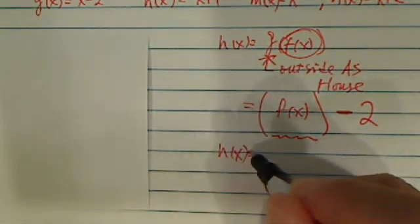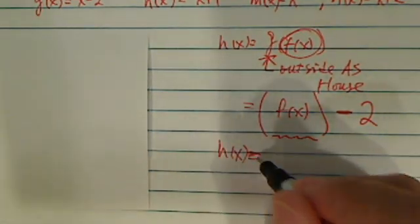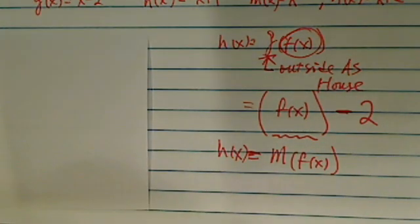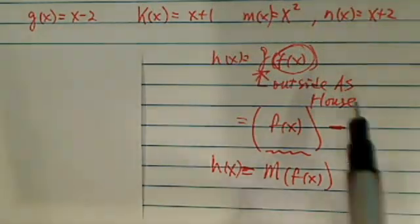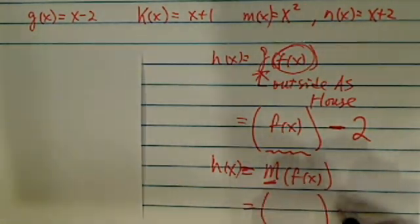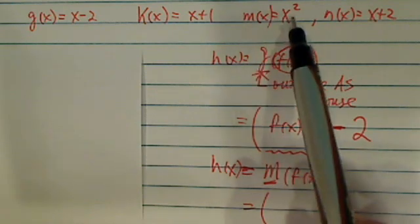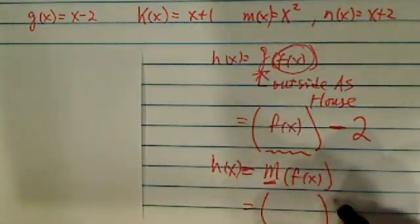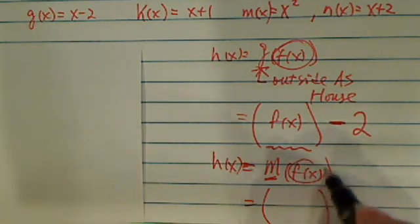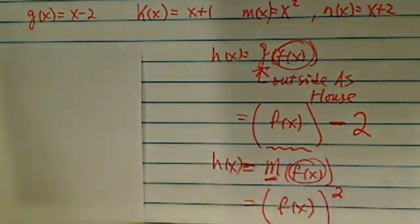Now had it been the other way around, h of x equal to m of f of x. Now m function looks different. Again, the outside one is the house. The m is set up as whatever you give me, I'm going to square it. So you set up the square term first and then you took whatever the guts is and you put it back in there.